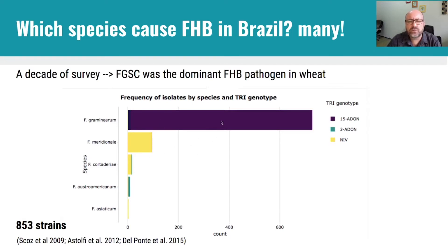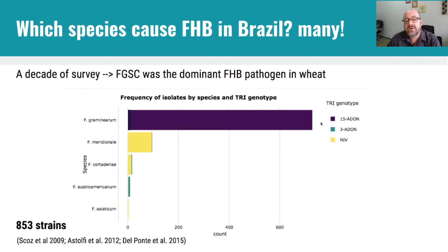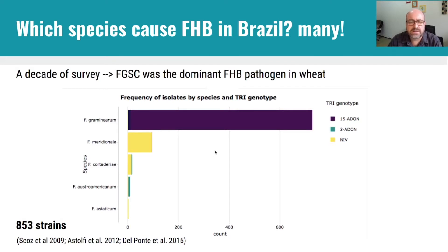Focusing on the Fusarium graminearum species complex, we can say that we have two main species associated with head blight: Fusarium graminearum and Fusarium meridionale. Another interesting fact is that Fusarium graminearum in Brazil only produces DON — the only chemotype we find is the 15-ADON. Graminearum does not segregate for other toxin types. Fusarium meridionale, on the other hand, is the nivalenol-producing species, which agrees with knowledge from other countries.